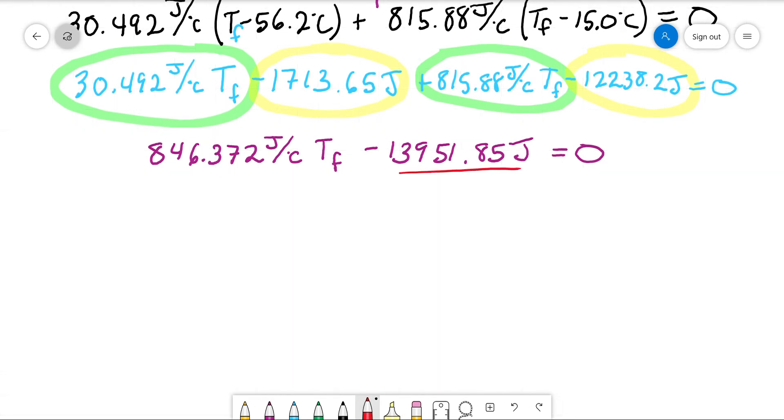So 846.372 joules per degree Celsius times T final minus 13951.85 joules. Again, still all equal to zero. Move this value over to the other side. So we have 846.372, and I'm keeping more sig figs than I need just to ensure I don't have a rounding error. Probably not entirely necessary, but not a bad idea.